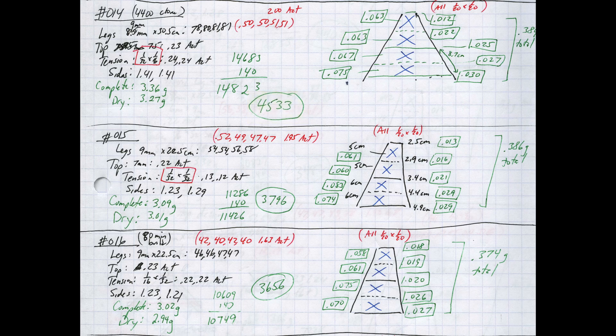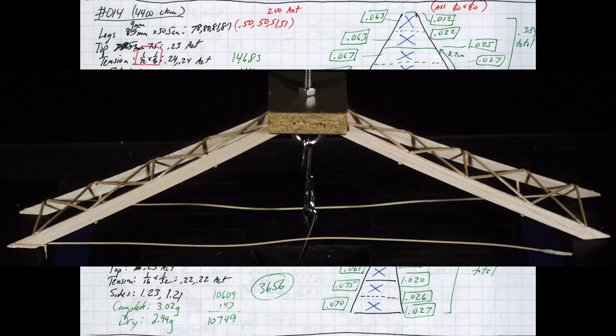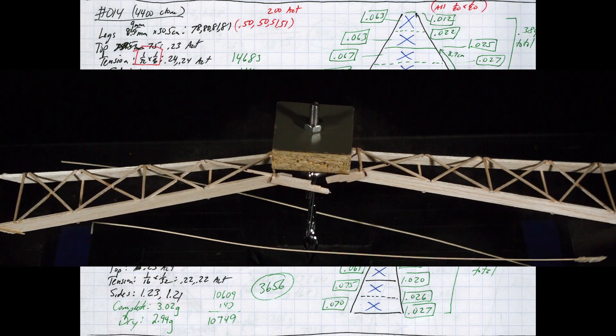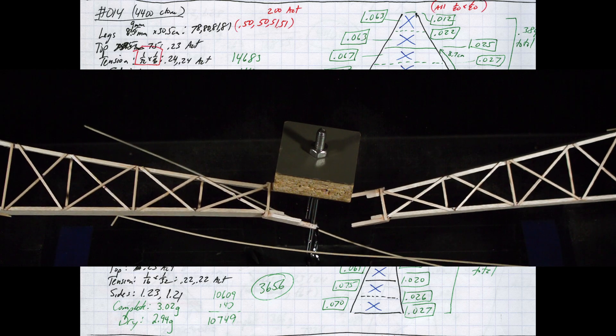For build number 15, I tried to duplicate build 14, but this time using 1/32 by 1/32 tension members. This change alone was enough to reduce the mass by 0.23 grams, and you can see from the final mass numbers this was almost exactly what the weight difference was between the two bridges. Unfortunately, as you can see from the high-speed footage, the failure was clearly at the tension member as it detached from the leg.